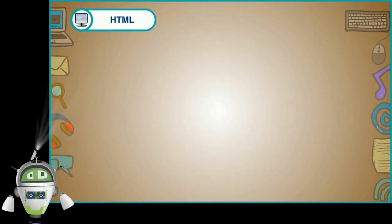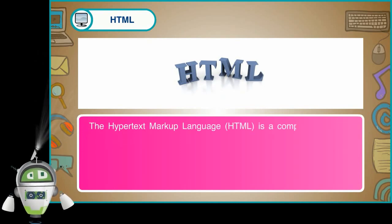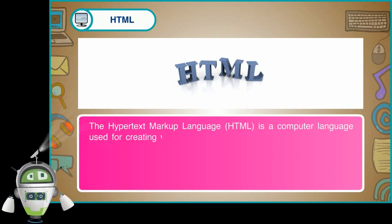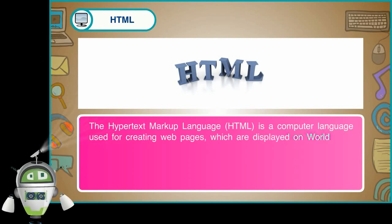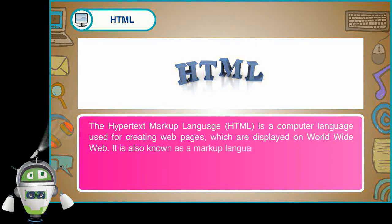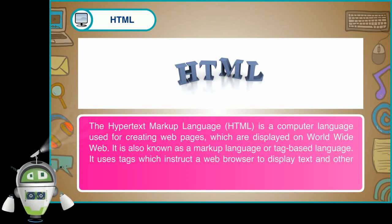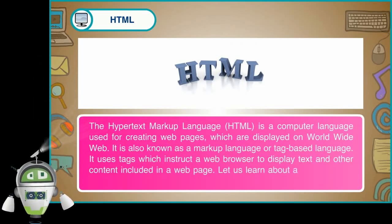HTML — Hypertext Markup Language — is a computer language used for creating web pages which are displayed on the World Wide Web. It is also known as a markup language or tag-based language. It uses tags which instruct a web browser to display text and other content included in a web page. Let us learn about all the sub-parts of HTML.